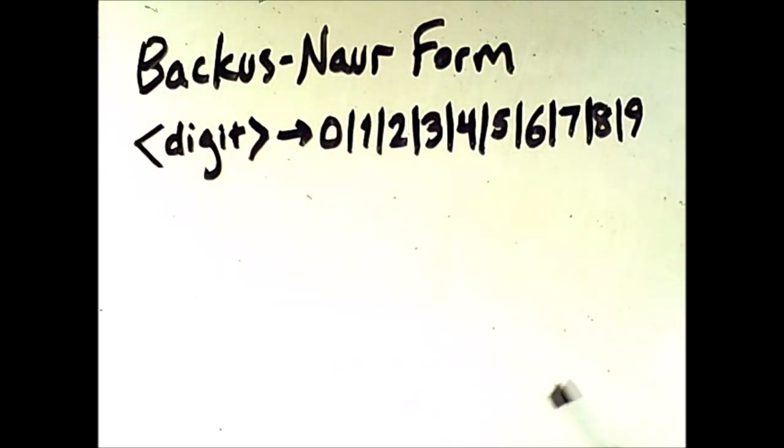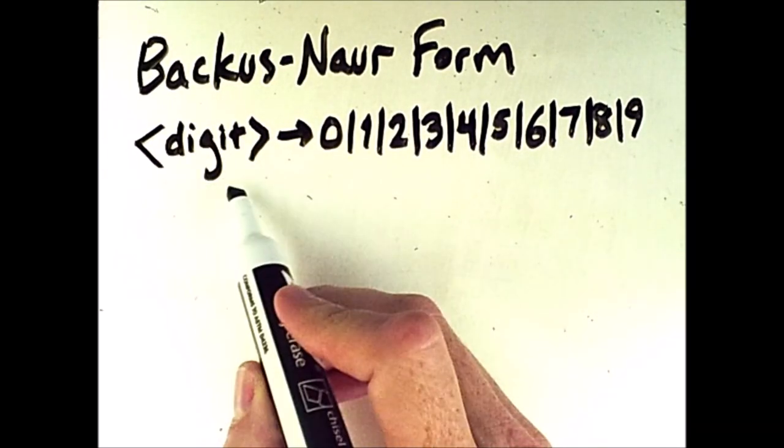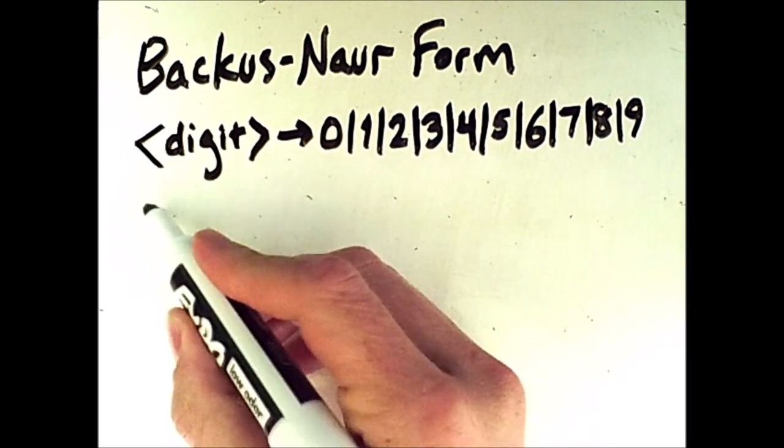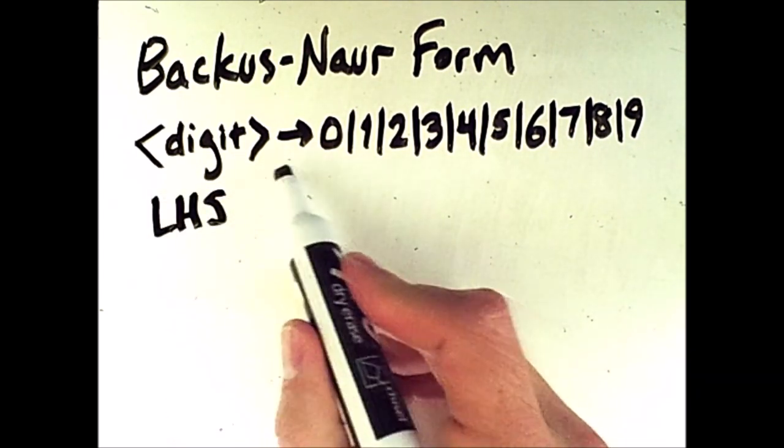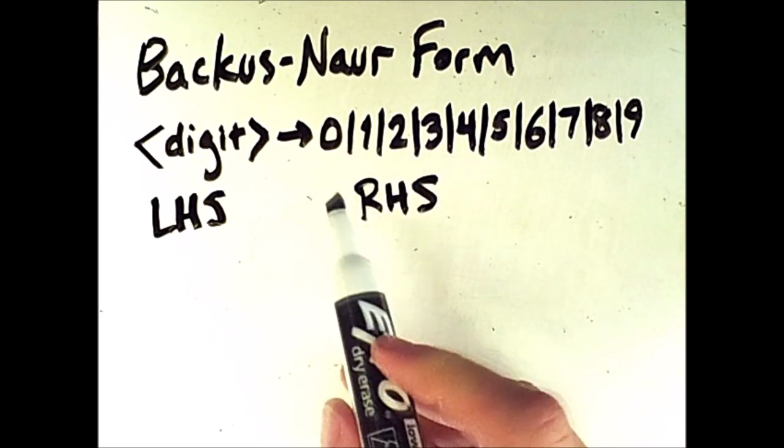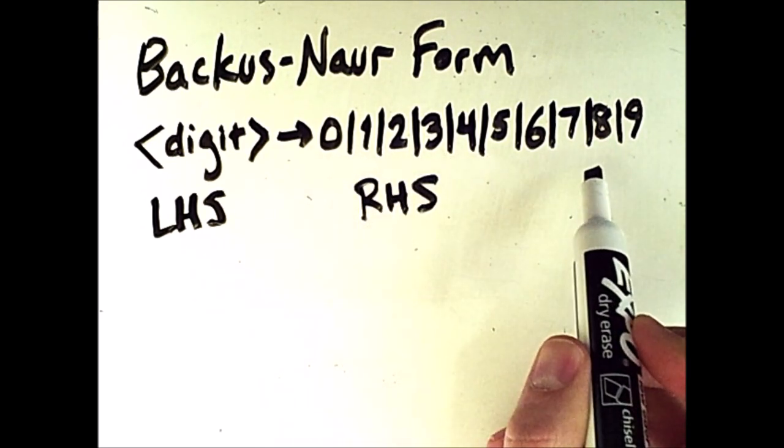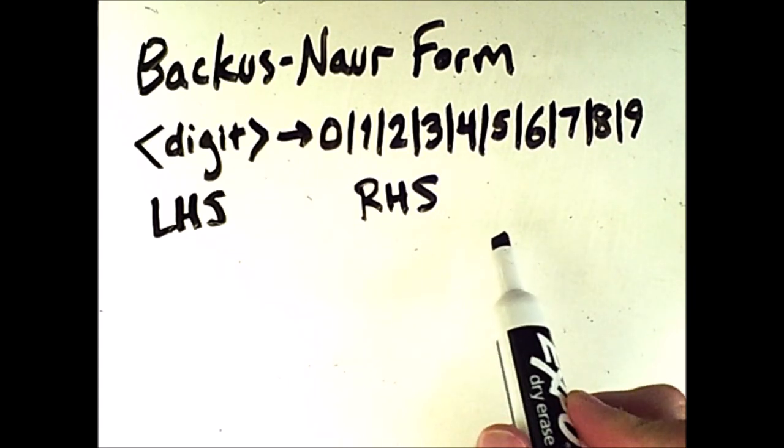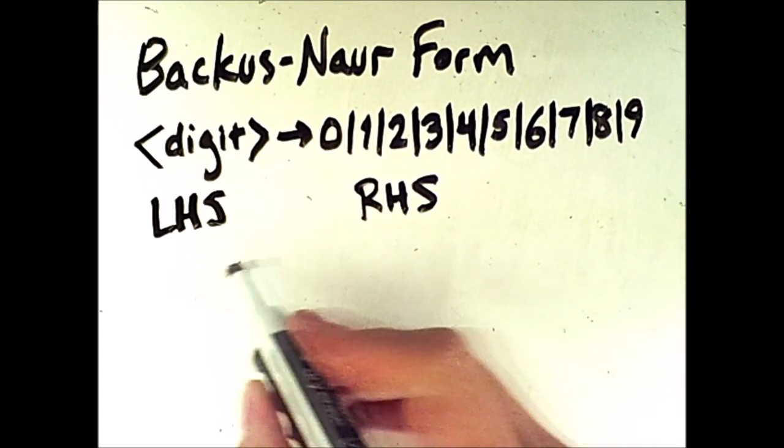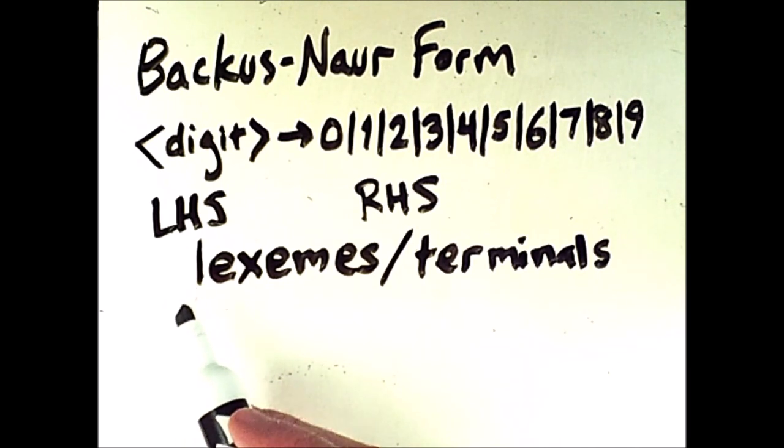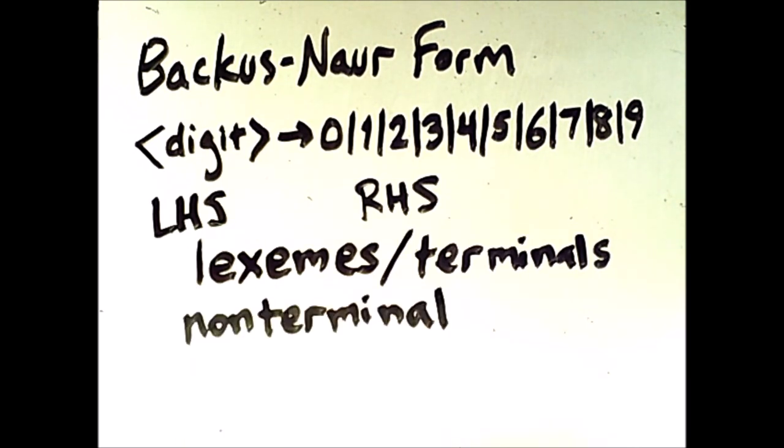Here is a single grammar rule. The digit is the left-hand side, and the part to the right of this arrow is the right-hand side. Each of these individual numbers are terminals. In the language of grammars, they are also called lexemes. The left-hand side is always a non-terminal, though we'll also see some non-terminals on the right-hand side in a moment. Non-terminals have these angled brackets around them, indicating that they can be expanded into something else.